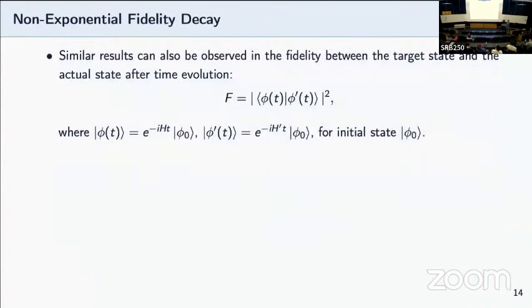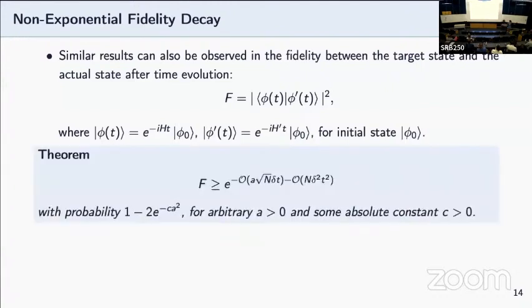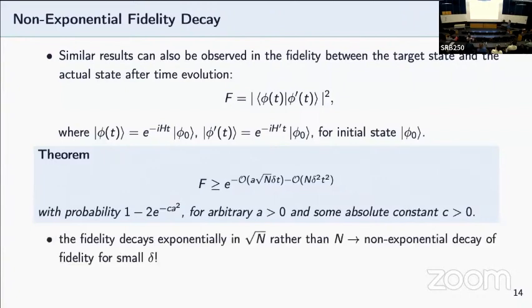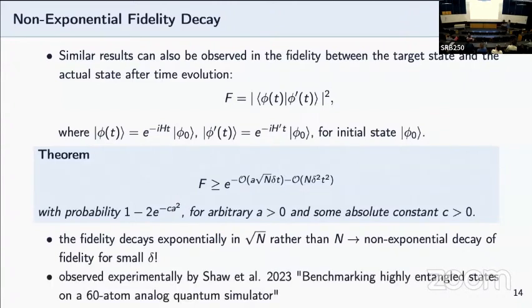Next, we can also extend our result to the fidelity decay setting. The way we set up the fidelity is the following. We have some initial state psi zero. We time evolve it under ideal Hamiltonian H, get to psi of t, and time evolve it under perturbed Hamiltonian H prime, get to psi prime of t, take their inner product and norm squared. This is our metric for fidelity. Our result is the following: the fidelity is lower bounded by the exponential decay with factor of the square root of number of qubits, which is better than the previous bound where the exponent is linear in n. So interestingly, this is also independently experimentally observed by Adam Chow from Manuel Endres' group at Caltech, where they had a slightly different setting but very similar to ours, and they were able to show this non-exponential fidelity decay experimentally as well on the atom platform.